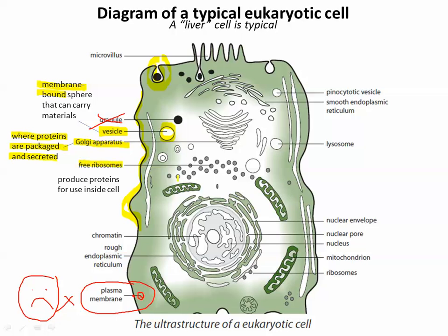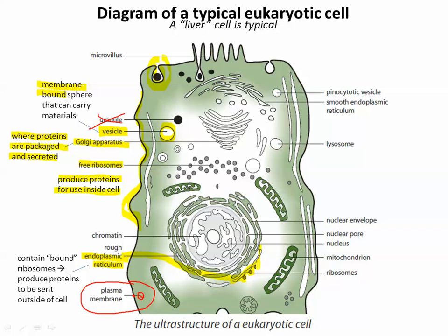The Golgi apparatus is where proteins are packaged and secreted — think of it as the post office. Ribosomes produce proteins. Free ribosomes floating in the cytoplasm make proteins destined to be used inside the cell, whereas ribosomes bound to the endoplasmic reticulum make it look rough and bumpy — that's the rough endoplasmic reticulum. Those ribosomes are also making proteins, but these proteins will be sent outside of the cell. And the Golgi apparatus is the place that can actually send some of those things out.